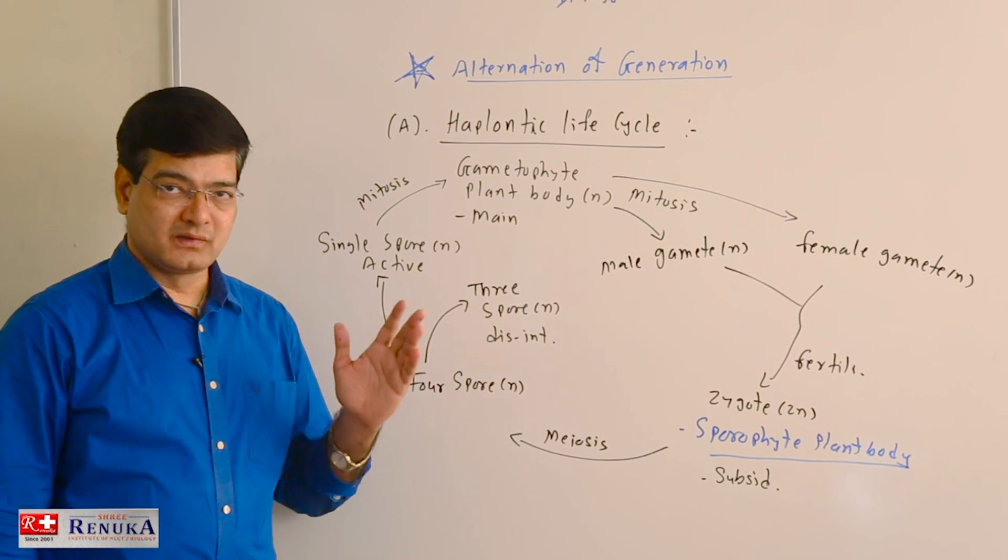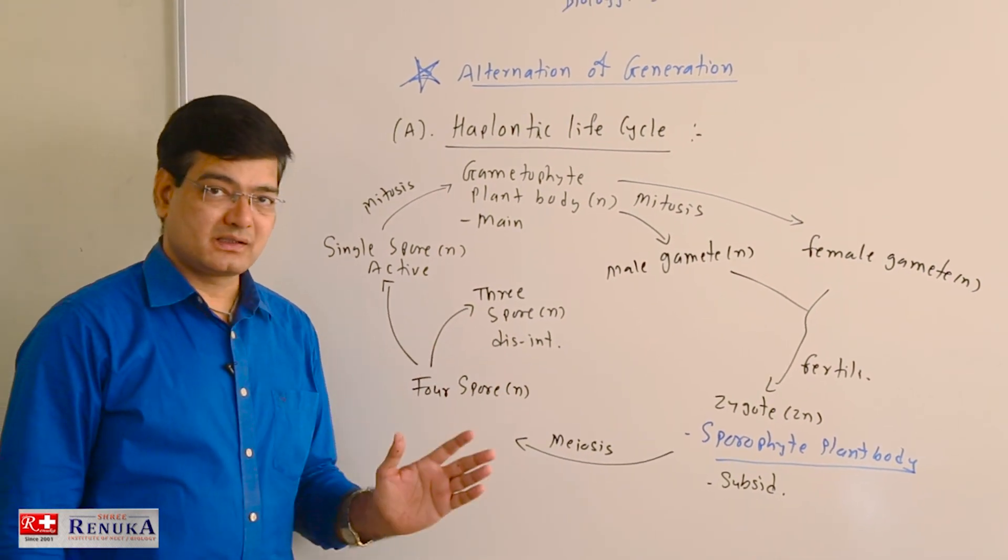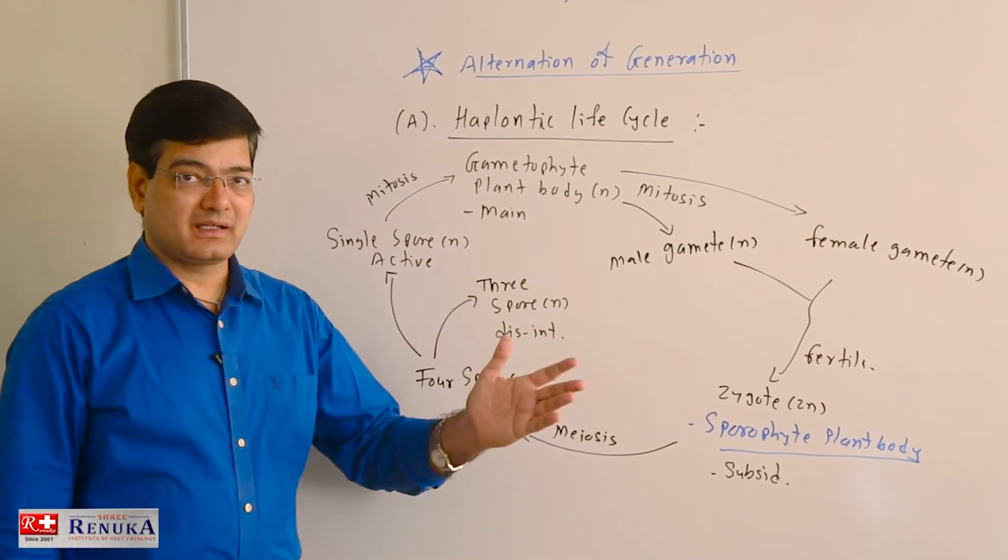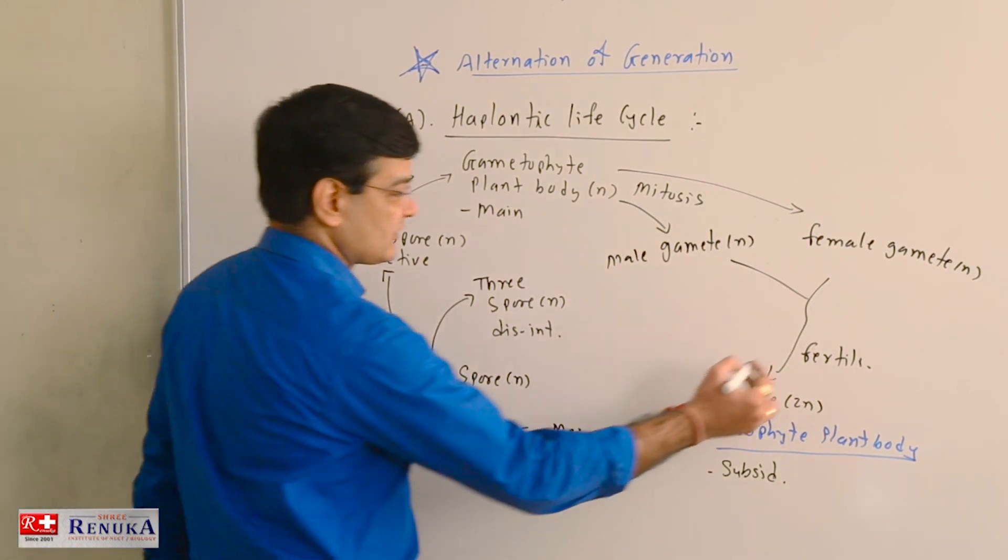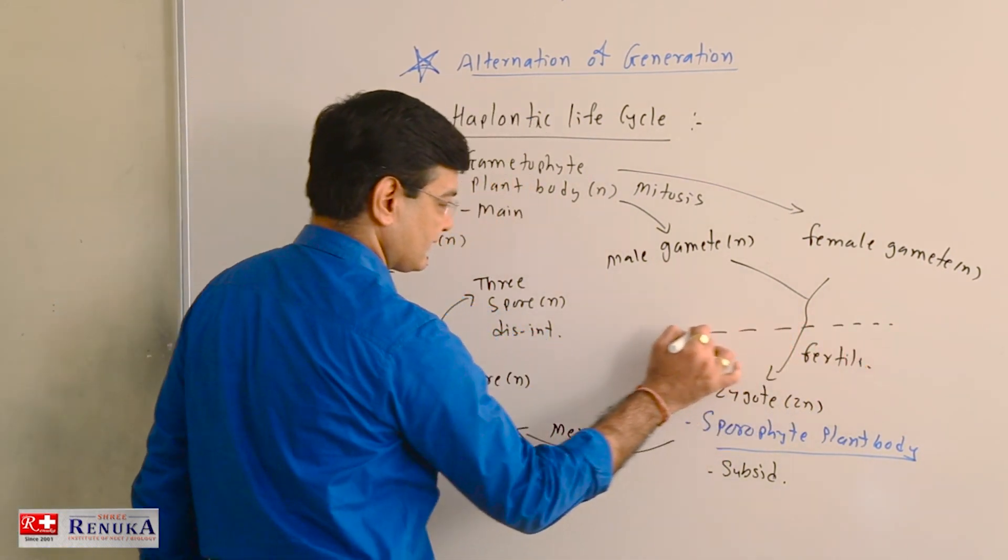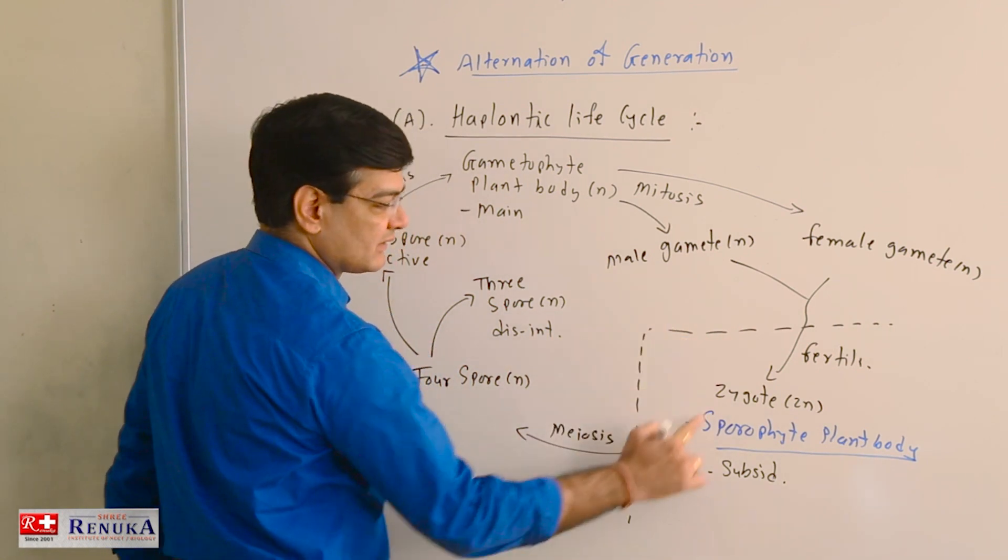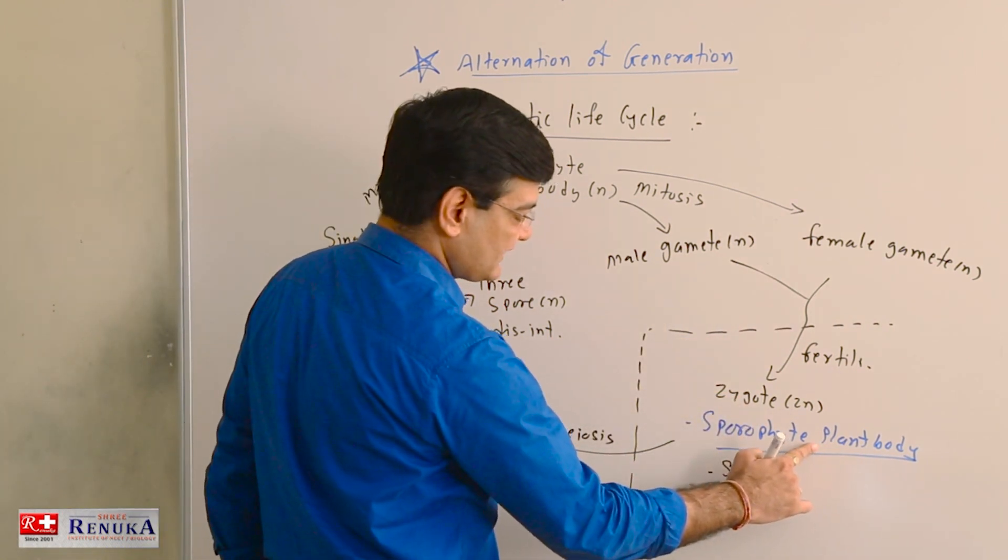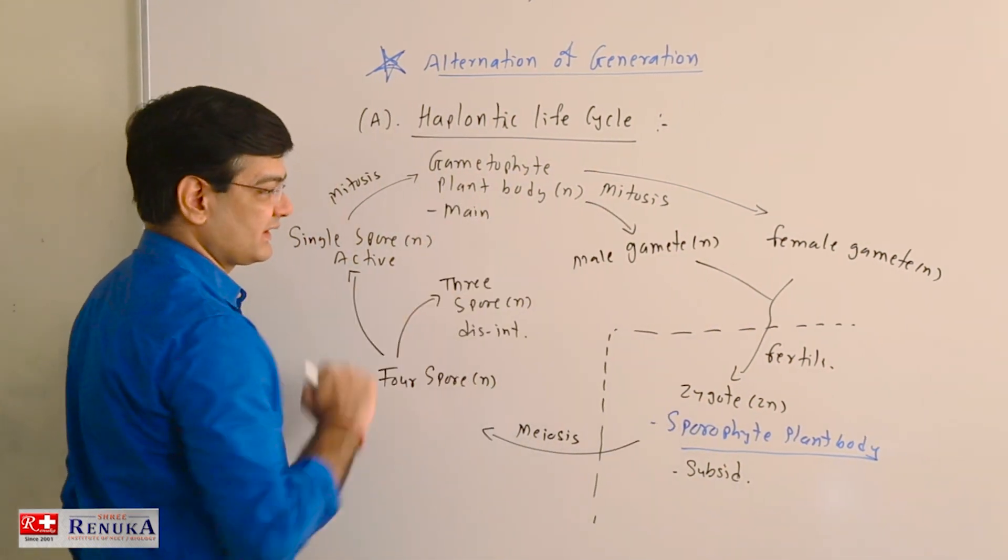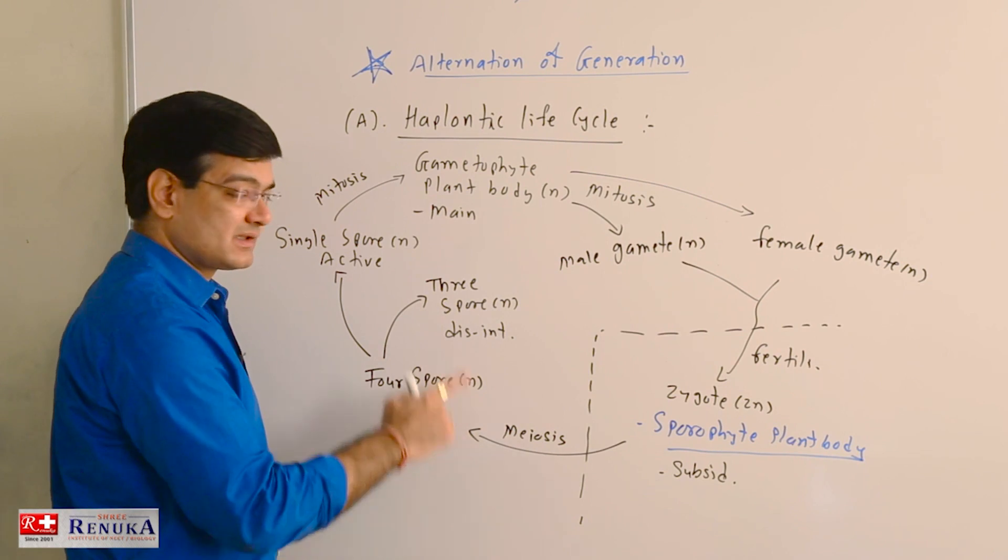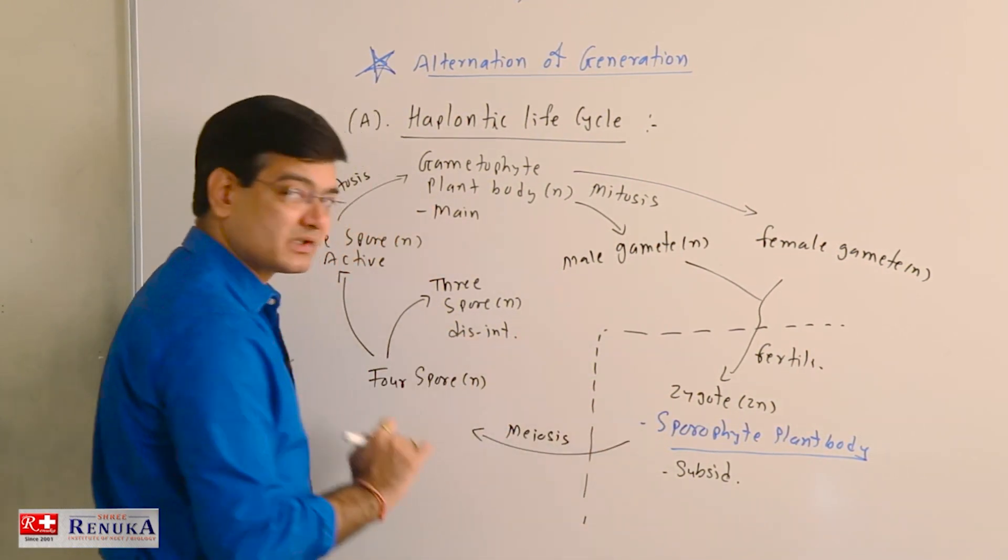In the case of Chlamydomonas, Ulothrix, and some other algae, this kind of life cycle is found. Here sporophytic plant body is short, as zygote is the sporophytic plant body itself, and this entire phase is the gametophytic phase, and it is so called as long-lived. This is short-lived structure.